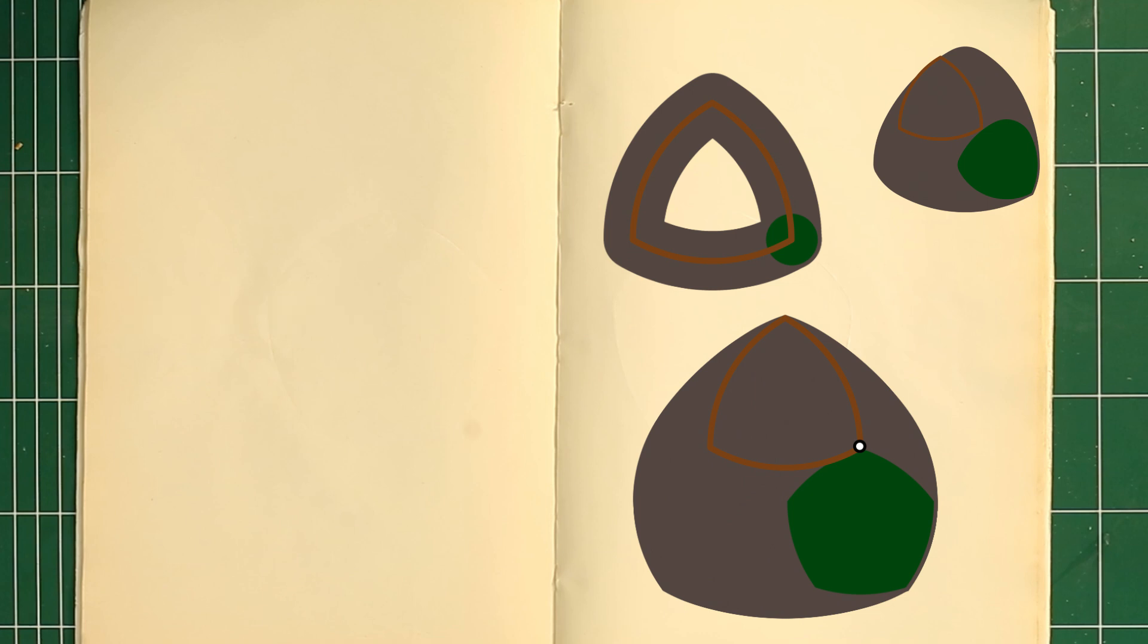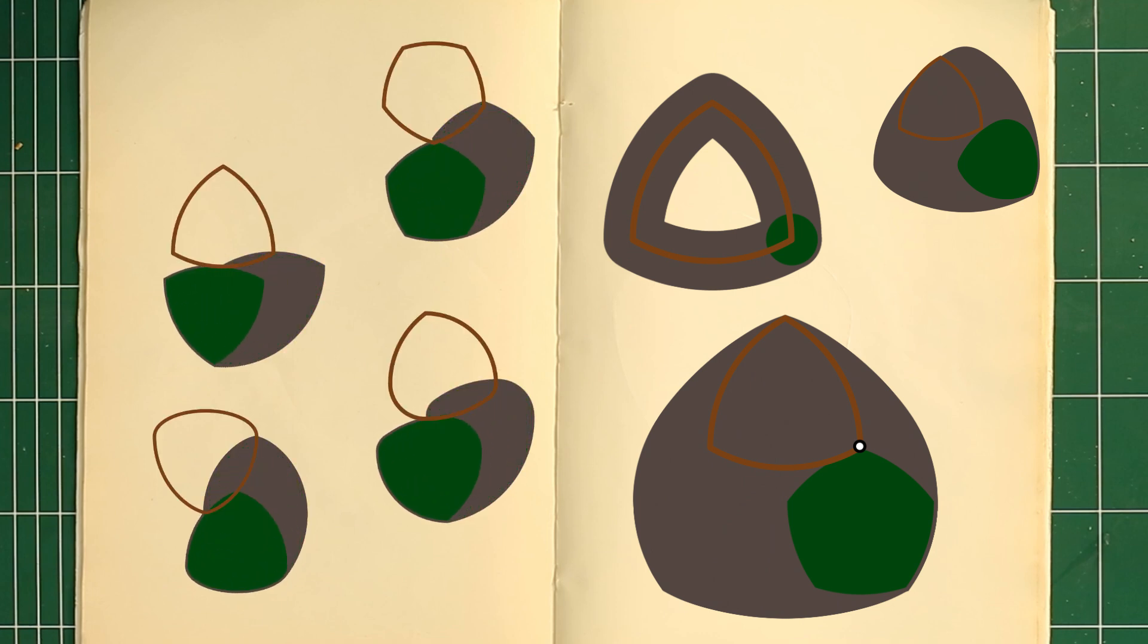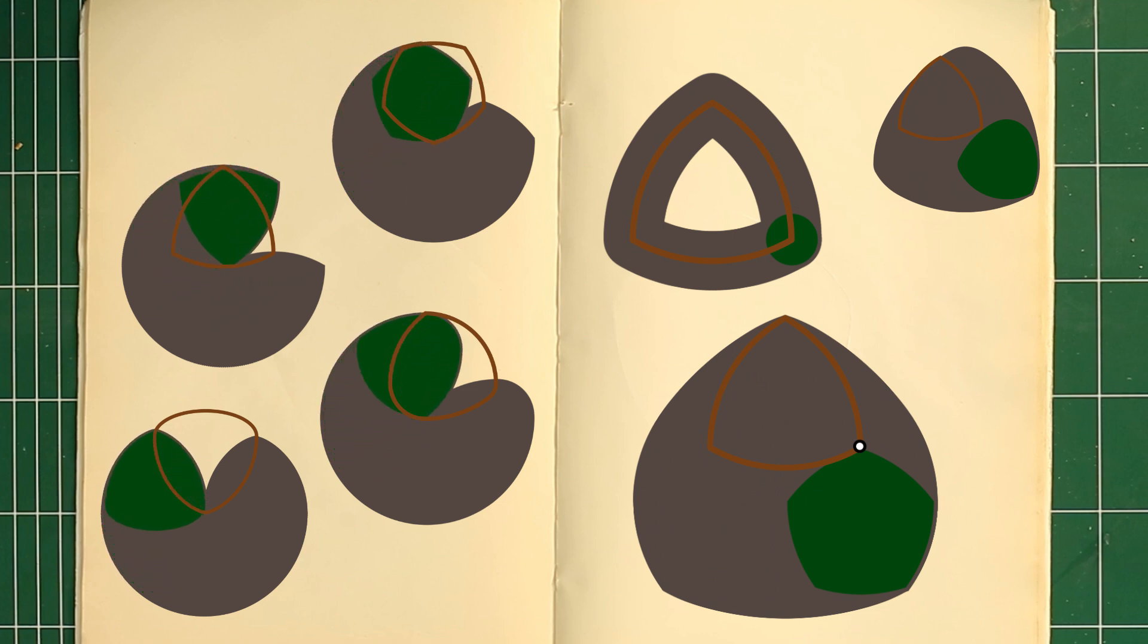An interesting point worth mentioning is that using this sliding technique to slide a flipped version of the same shape will always result in a circle with diameter twice the width of the original shapes. This interesting property is used to prove that all shapes with the same width also have the same circumference, and is of course equal to pi times the width.